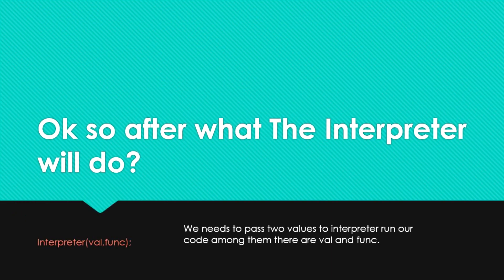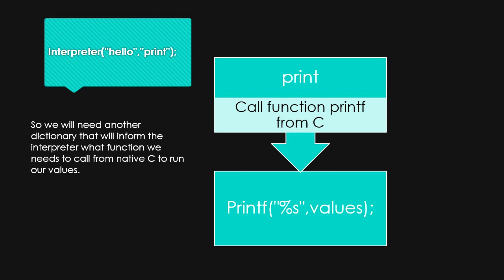So, after that — what will the interpreter do? The interpreter will interpret the values and the functions that the parser collected. For example, we need to pass two items to the interpreter to run our code: our value and our function. Here, the interpreter receives 'hello' as the value and 'print' as the function. We need a dictionary that will inform the interpreter what native C function to call to run our values.